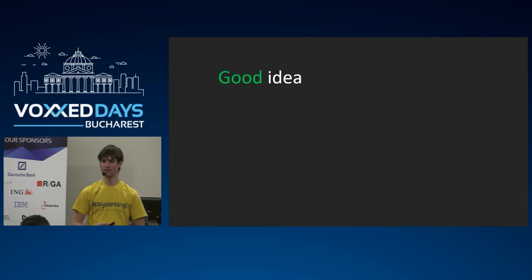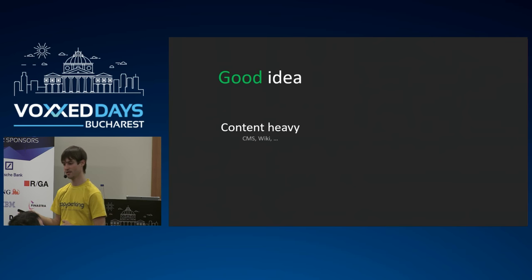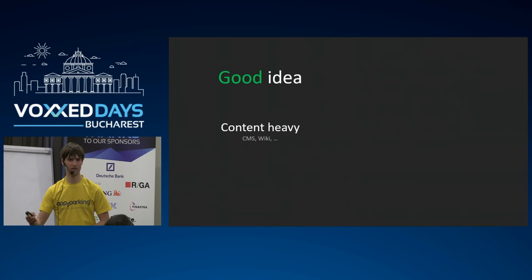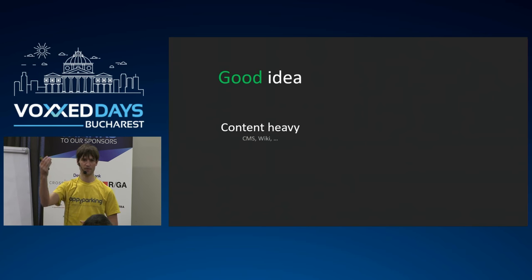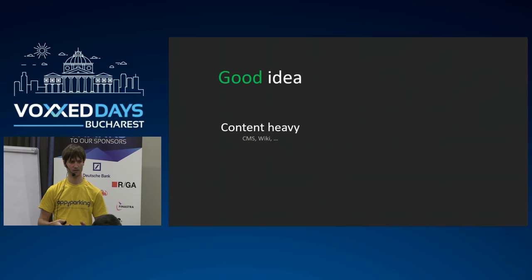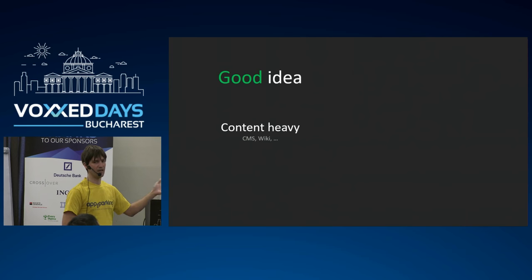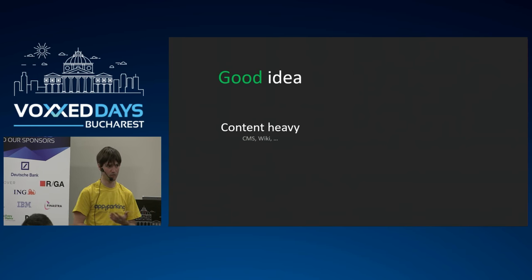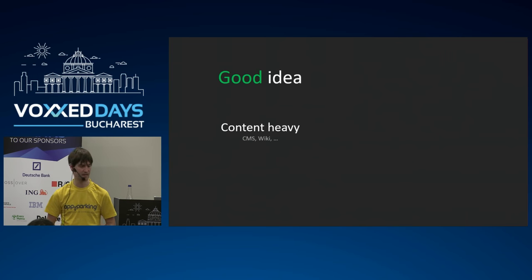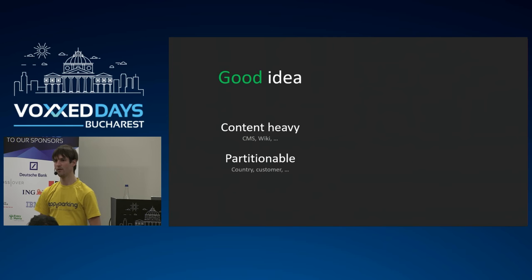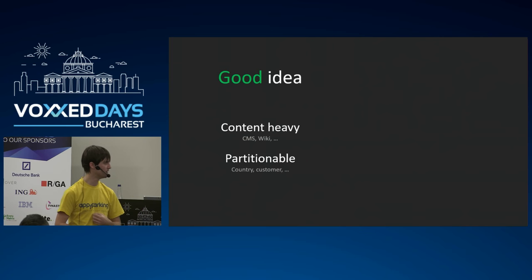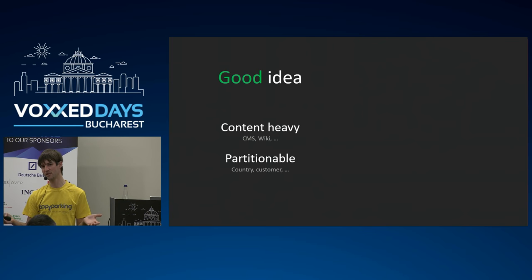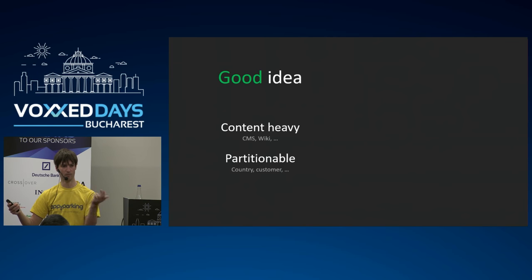When is using Git as a database a good idea? Mostly with content-heavy applications — a CMS or a wiki. For example, GitHub's wiki feature is actually a Git repository on the back end, so they're already using Git as a database. That works perfectly fine because no one is going to create thousands of wiki posts per second. Another good opportunity is when your data is partitionable — even with high write requirements, as long as the data is partitionable you can create different repositories and multiply your write speed.